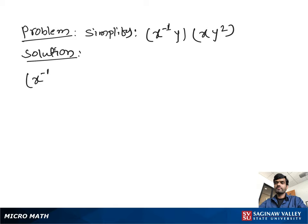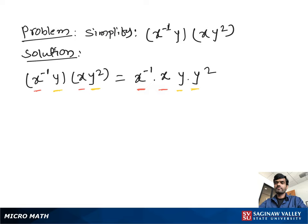Simplify x to the power negative 1 times y, multiplied by x times y squared. Writing x terms next to each other and y terms next to each other, using exponent properties we add the powers of the same terms. We then get x to the power 0, y to the power q. Since any term with power 0 equals 1, we get y to the power q.